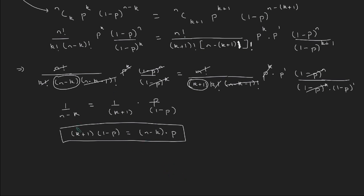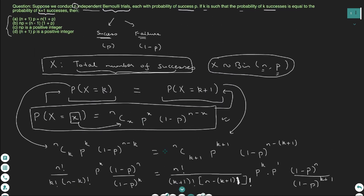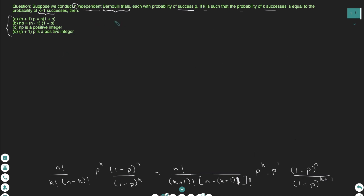Now I need to solve this expression further to see which of the four given statements is actually true. Expanding the brackets: the left-hand side becomes K minus KP plus 1 minus P, and the right-hand side becomes NP minus KP. From both sides I can cancel the KP terms, leaving K plus 1 minus P equals NP. Moving P to the right-hand side gives K plus 1 equals NP plus P, and factoring out P on the right gives K plus 1 equals N plus 1 multiplied by P.